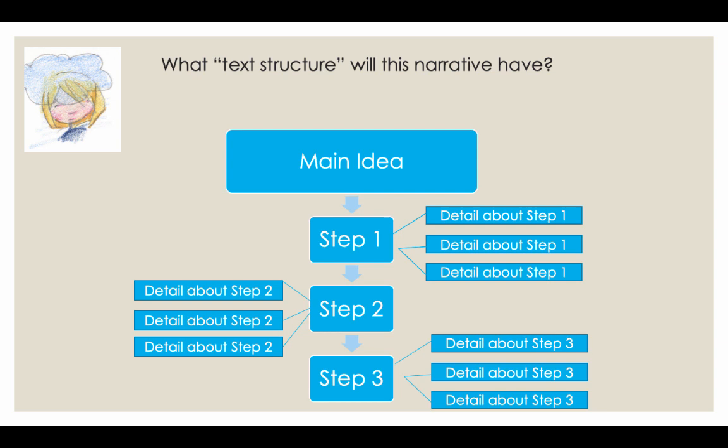For example, maybe step one would tell how to set up the game and everything I do to set it up. Then maybe I would tell what I do while I'm playing the game. And at the end, maybe I would talk about how I win and what happens when I win — something like that. You're going to want to add details that give depth and interest to your writing. So I'd like for you to take this topic and make this brainstorming pattern, this step-by-step graphic organizer, to get your thoughts organized.